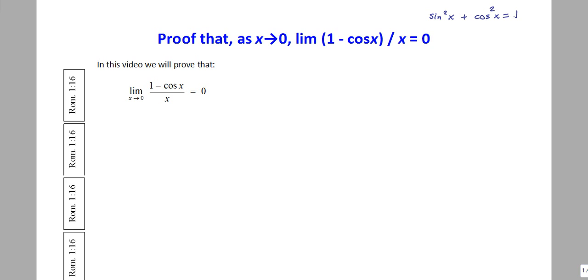And so why is that important? Because if I subtract cos squared x on both sides, I'm going to be able to know that 1 minus cos squared x is equal to sine squared x. We will make use of that here in just a second.